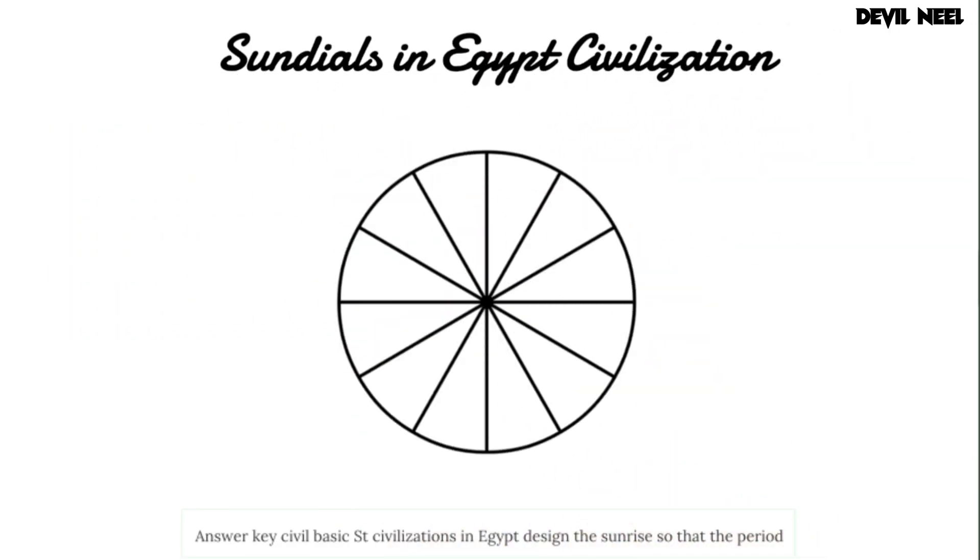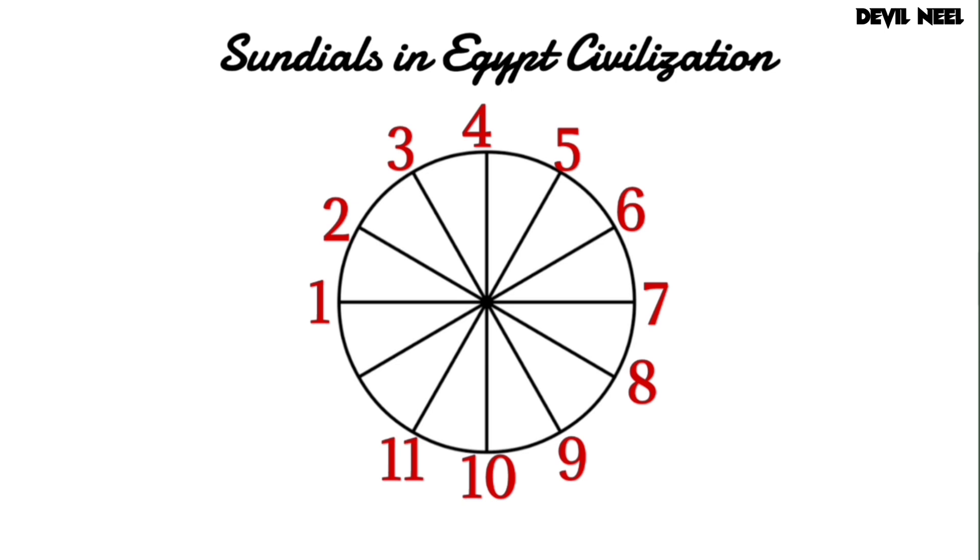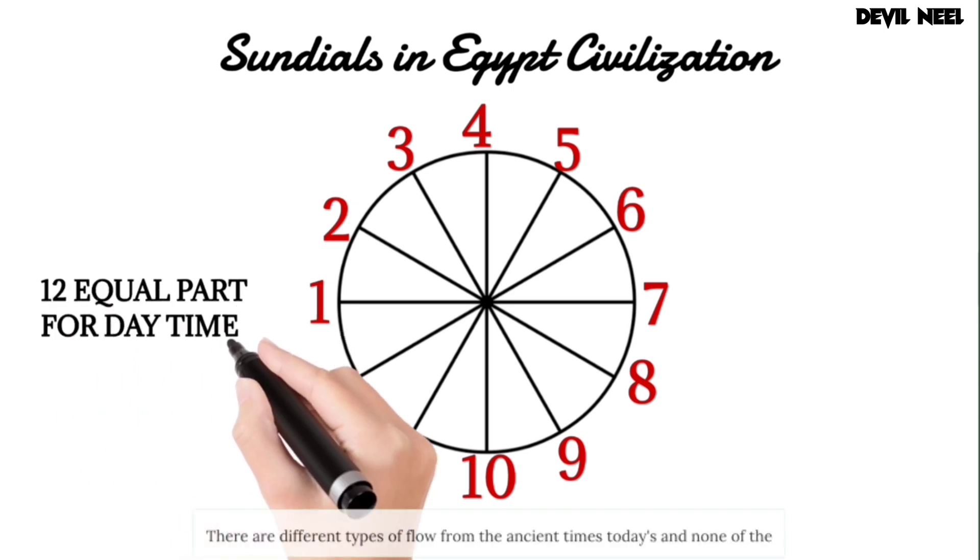Civilizations in Egypt designed their sundials so that the period between dawn to dusk is divided into 12 equal parts, and so the night time into 12 equal parts to mirror the daytime. Historians believe that the 12 number has a special significance.